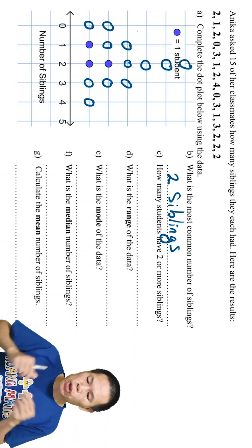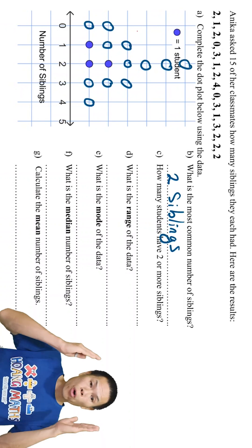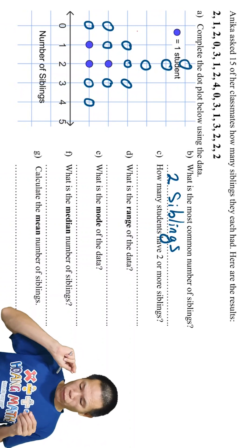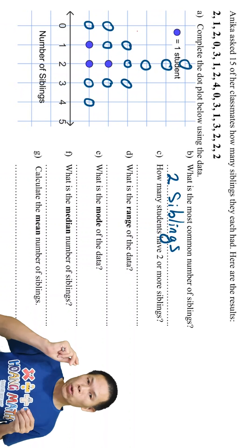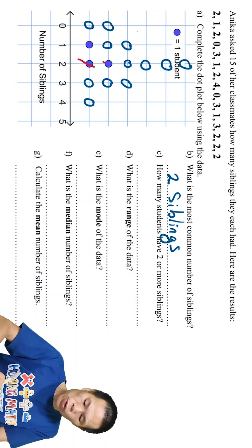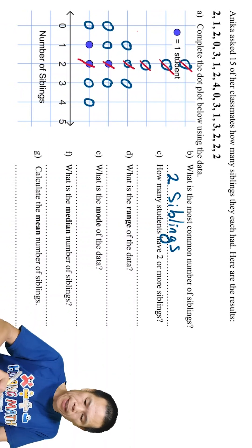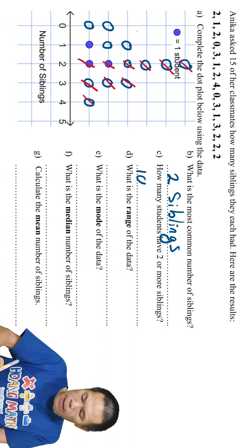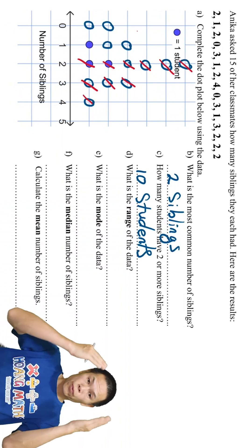Part C: how many students have 2 or more siblings? So 2 or more, that means from 2 onward, including 2. 1, 2, 3, 4, 5, 6, 7, 8, 9, 10. So 10 students.